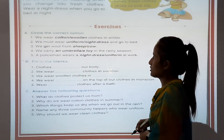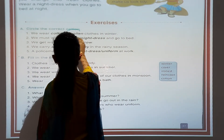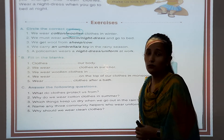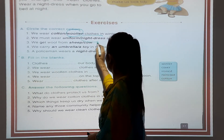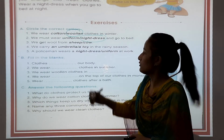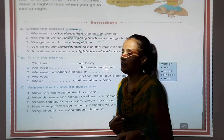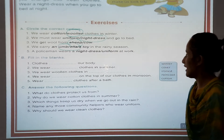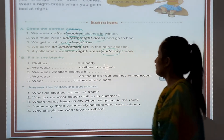Circle the correct option. We wear woolen clothes in winter — because woolen clothes keep our body warm. We must wear night dress when we go to bed. We get wool from sheep. We carry an umbrella in a rainy season. A policeman wears uniform at work.